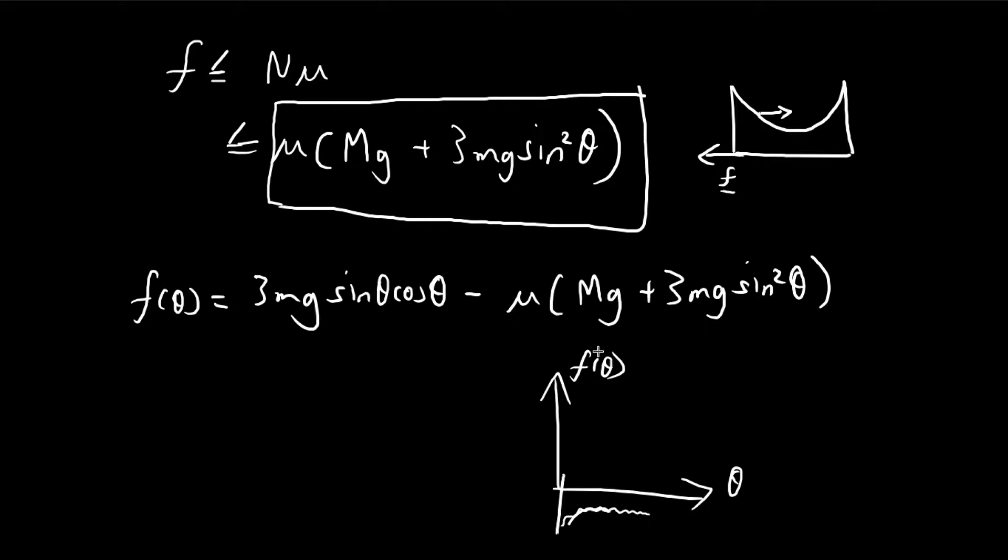So this function is going to keep varying and it's going to hit a certain maximum and then maybe go back down again. So in order for this ball to not move, we need to make sure that this maximum is always smaller than or equal to zero.